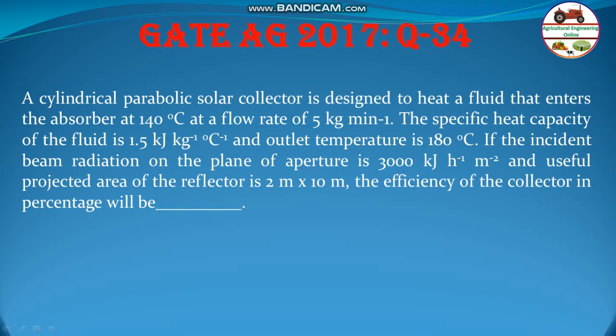A cylindrical parabolic solar collector is designed to heat a fluid that enters the absorber at 140 degree Celsius at a flow rate of 5 kg per minute. The specific heat capacity of fluid 1.5 kilojoule and outlet temperature is 180 degree.